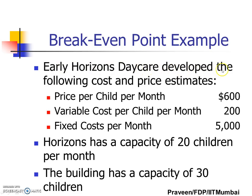Let us understand this with an example. Early Horizon Daycare developed the following cost and price estimates: price per child per month is $600, variable cost per child per month is $200, and fixed cost per month is $5,000.